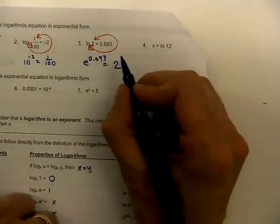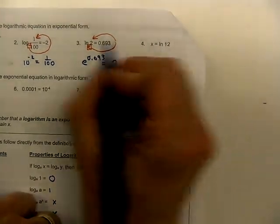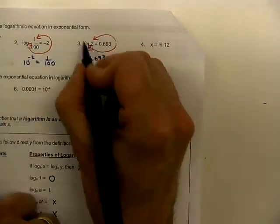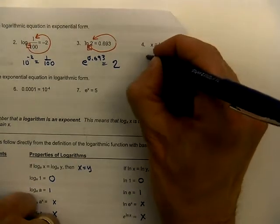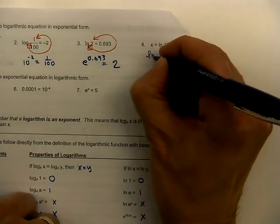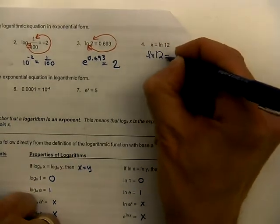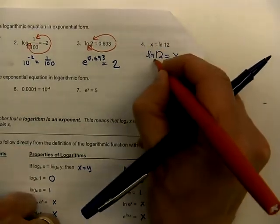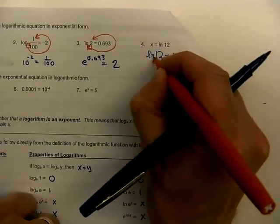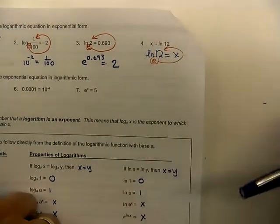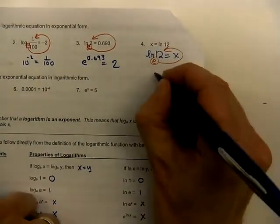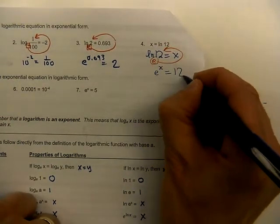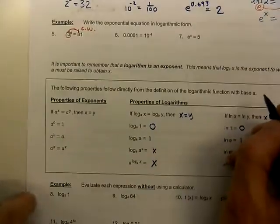In order for this little trick to work, I need to have my logarithm on the left-hand side. Each of these examples were like that, but I don't have that here. So I'm going to take a moment and rewrite this as natural log of 12 equals x. Now I'll find my base of e and write that as e to the power of x equals 12.